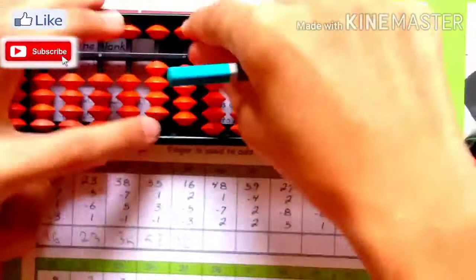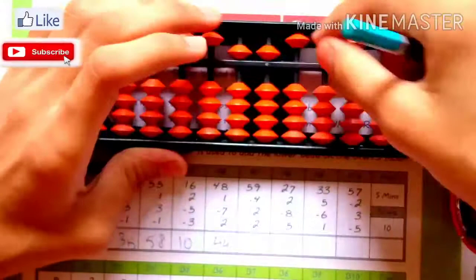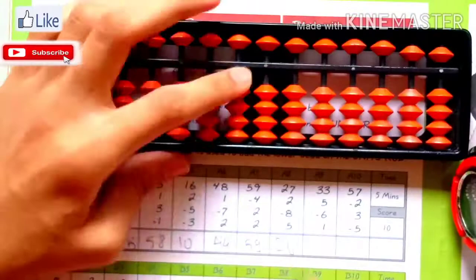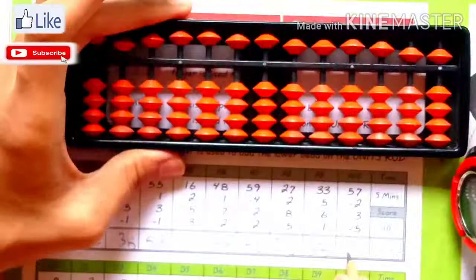Next sum: 48, plus 1, minus 7, plus 2, 44. 59, minus 4, plus 2, plus 2, 59. 27, plus 2, minus 8, plus 5, 26. 33, plus 5, minus 6, plus 1, 33. 57, minus 2, plus 2, plus 3, minus 5, 53. Just stop. 50 seconds.